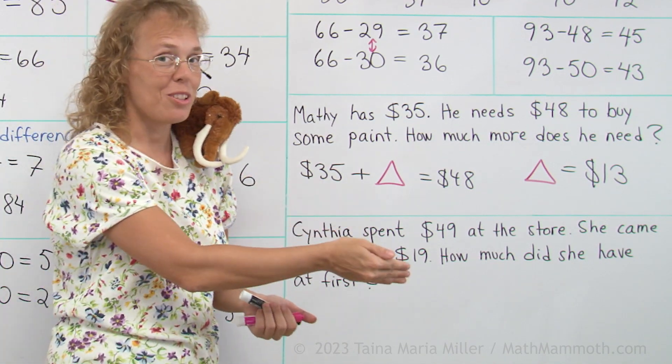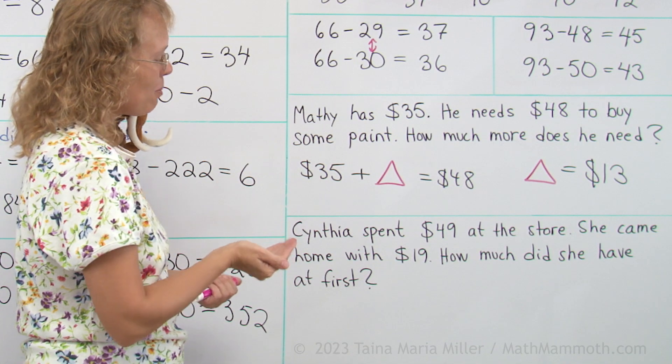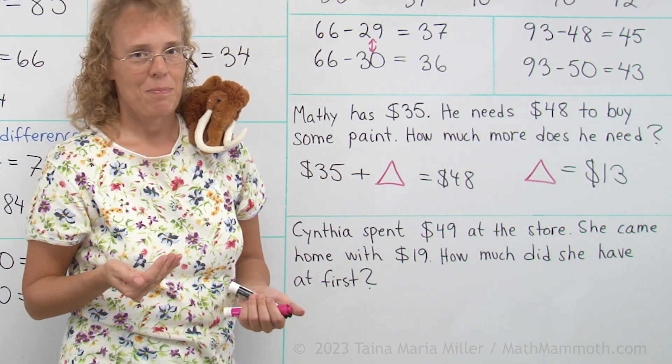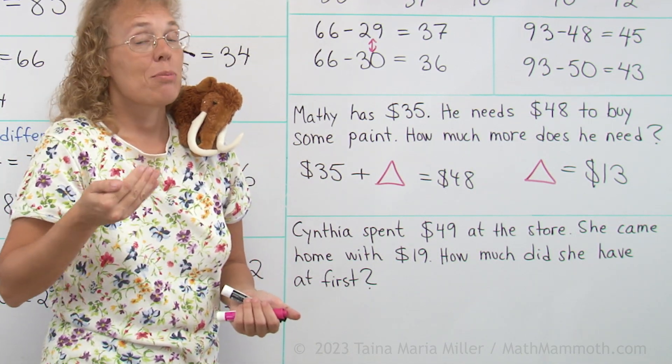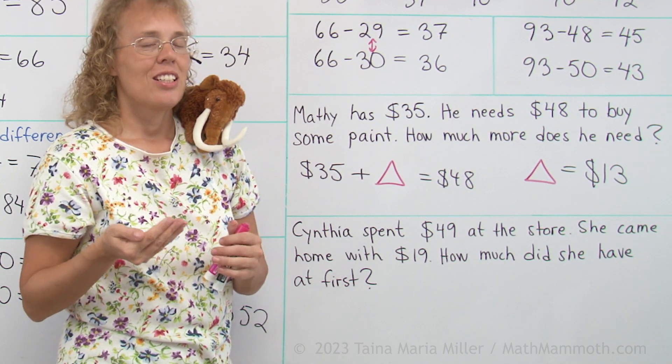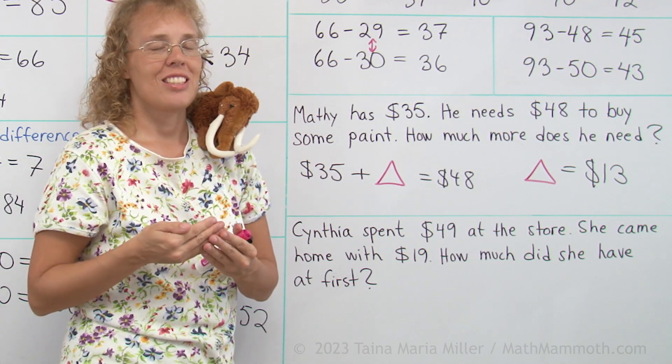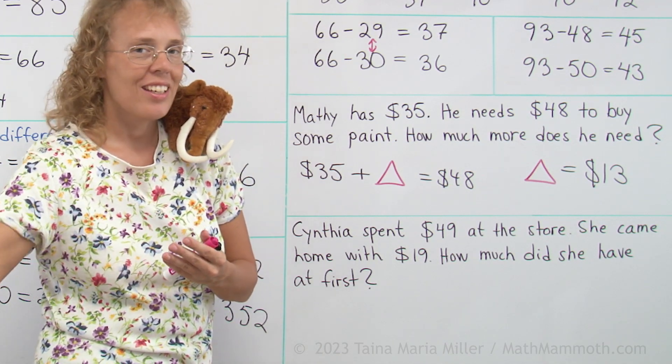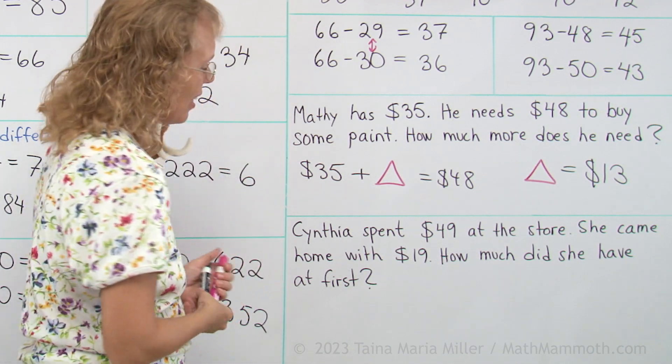So $49 goes out of her purse, right? And then what is left in her purse is $19. Now that is a subtraction situation. She has some at first and some of that money goes away and then some is left.